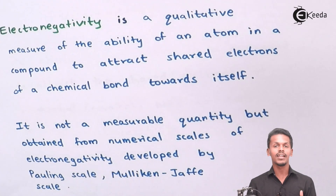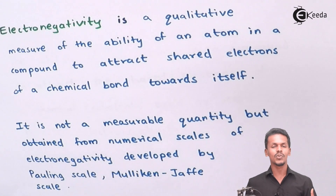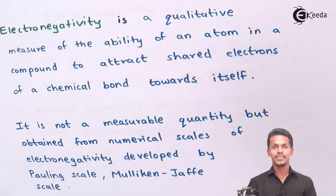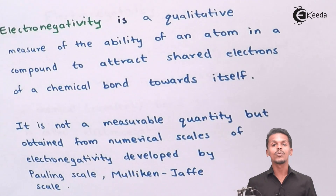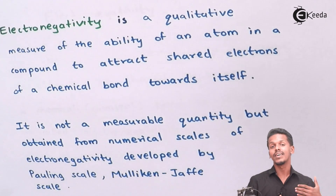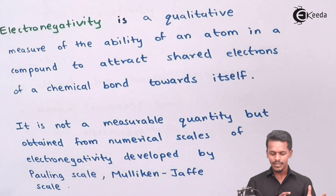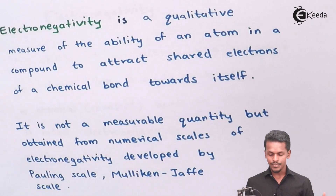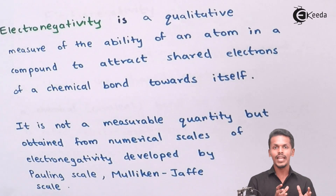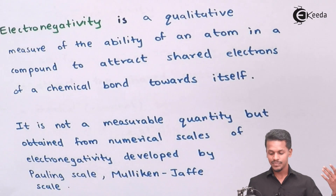These numerical scales of electronegativity are derived by scientists — for example the Pauling scale. The Pauling scale gives an analysis of what the electronegativity of a particular atom would be when combined with other atoms to form a compound. Other scales include Mulliken's Jaffe scale. These scales predict the electronegativity of a particular atom in a compound. Electronegativity cannot be directly measured, but it can be compared using scales like the Pauling scale and Mulliken's Jaffe scale.